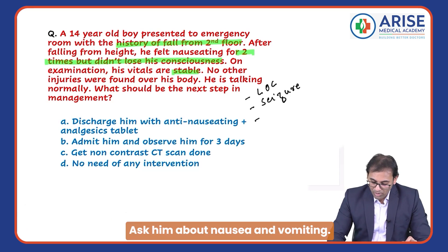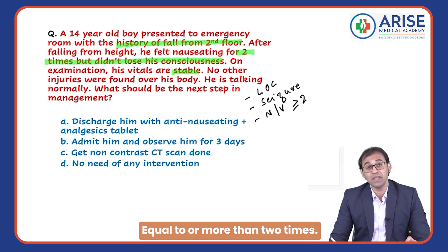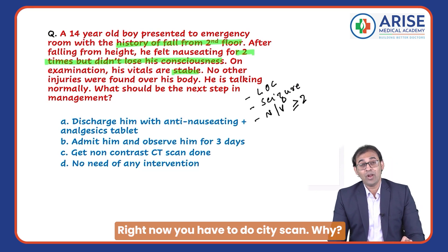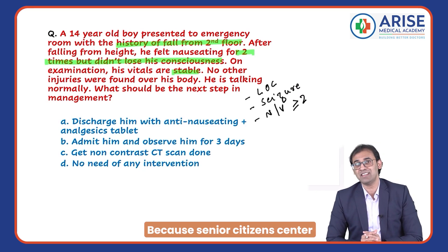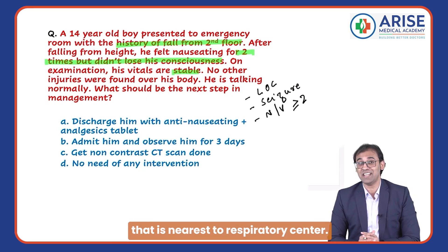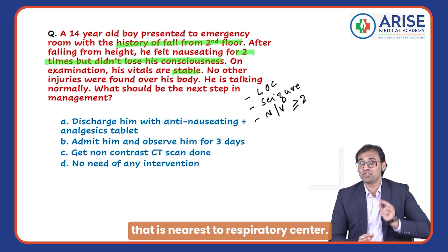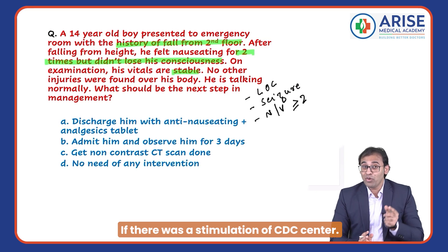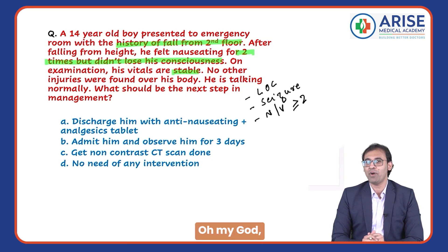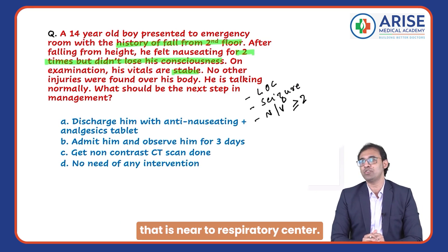Ask about nausea and vomiting equal to or more than two times. If yes, you have to do a CT scan. Why is this important? Because the CTZ center — the chemoreceptor trigger zone — is nearest to the respiratory center. If there was stimulation of the CTZ center, that is near to the respiratory center, you must act urgently.